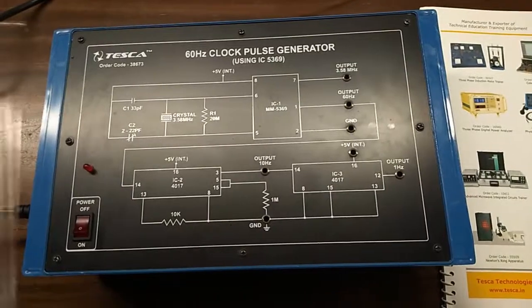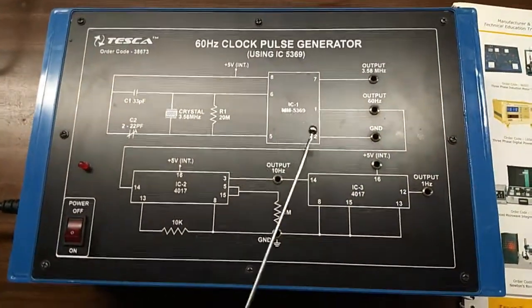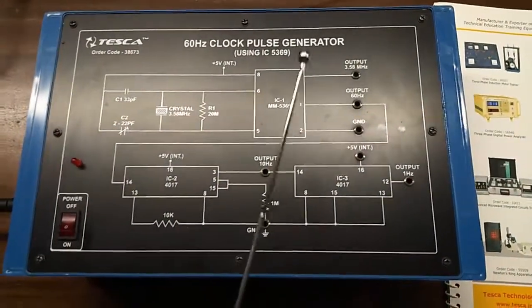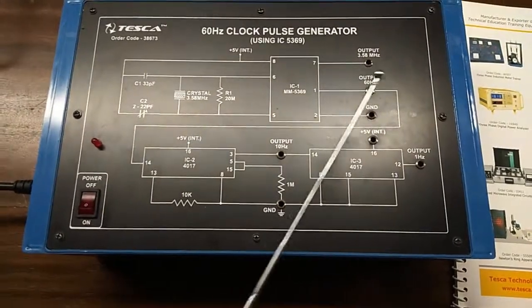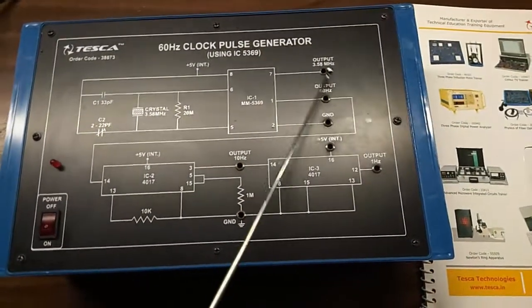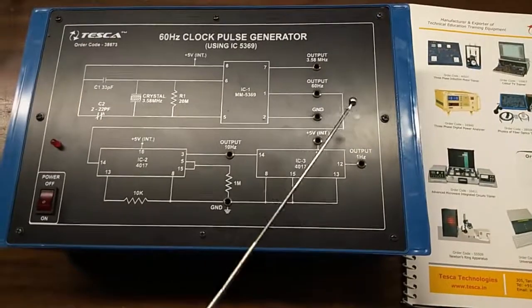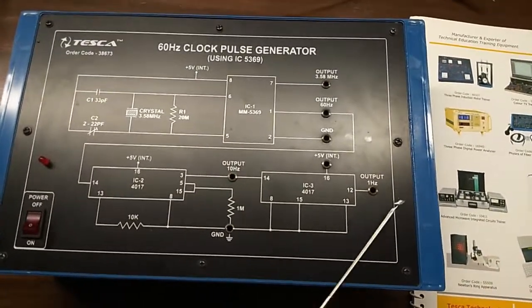This is the mimic diagram given on the circuit. This is the IC 5369. We will observe the frequency here at output 3.58 megahertz, here at 60 hertz, here at 10 hertz and 1 hertz.